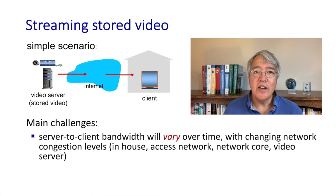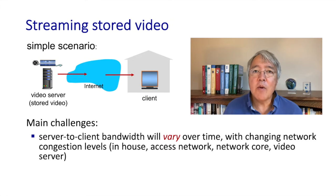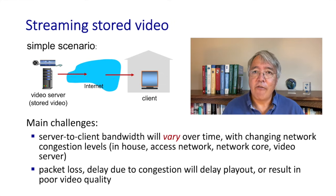When thinking about the technical challenges of streaming stored video, there are two sources of complexity. First, the amount of available bandwidth between client and server changes over time — there could be congestion in the home network, access network, core network, or within the video server itself. Second, delays between a source and destination on the internet also vary over time. In a packet-switched network we see variable delays, and we need to adapt to that at the client.